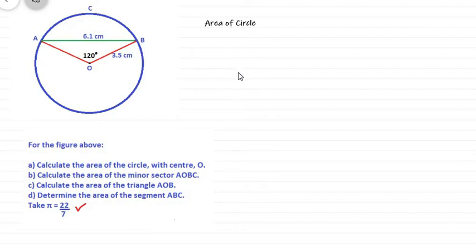Okay, so the first thing we want to do is to work out the area of the circle. Now the area of the circle can be found using the formula pi r squared, which means pi multiplied by the radius and multiplied by the radius length again.